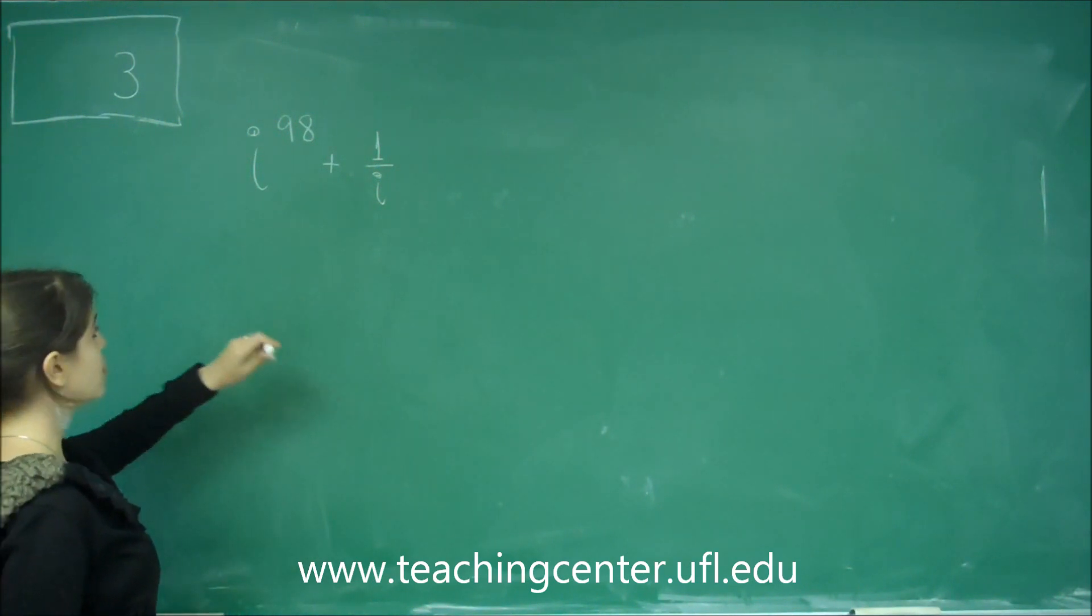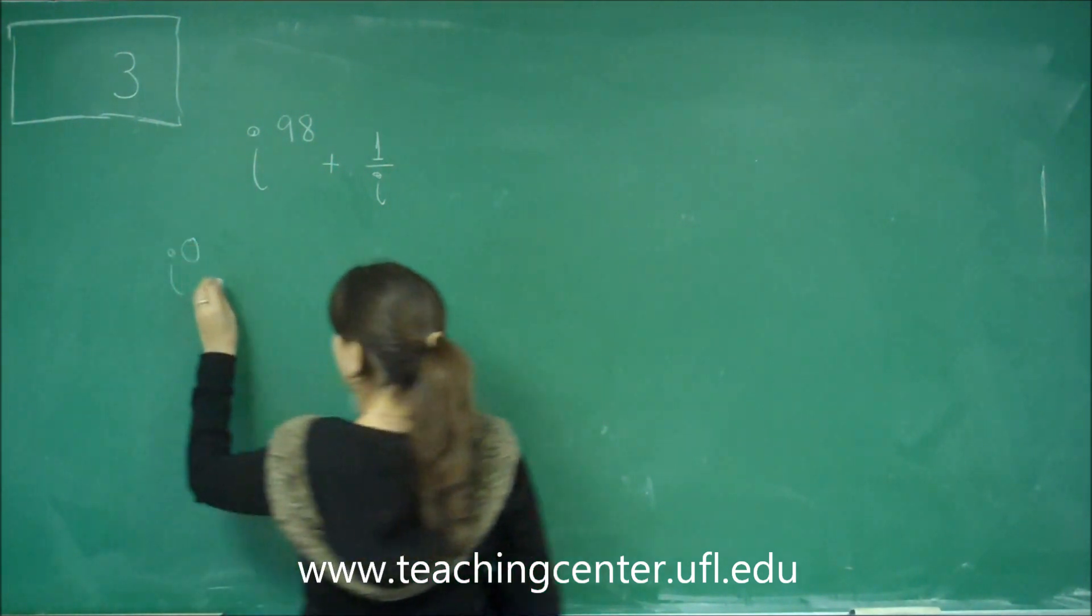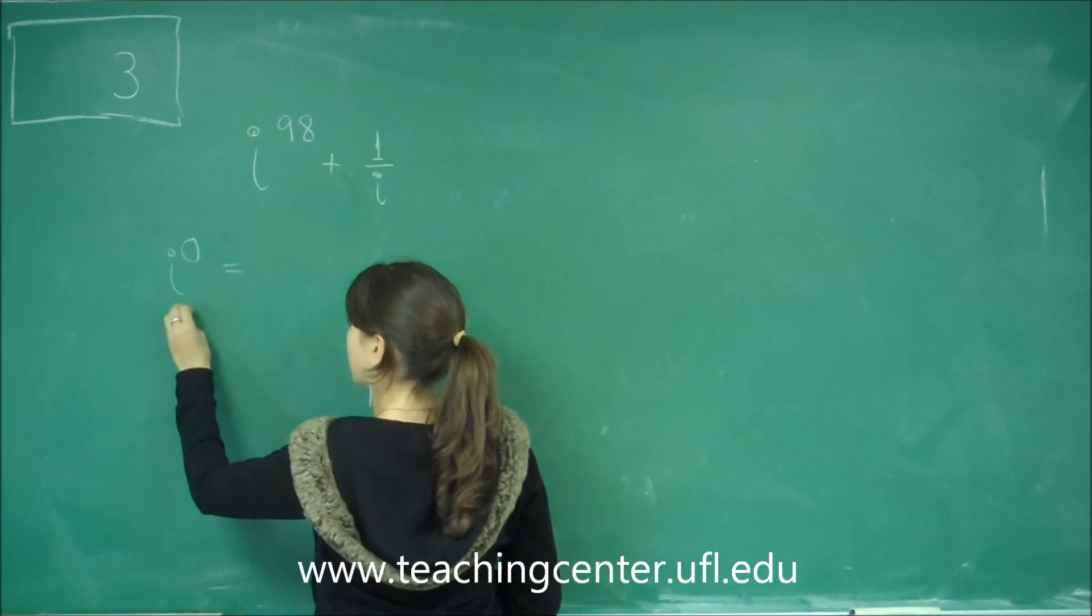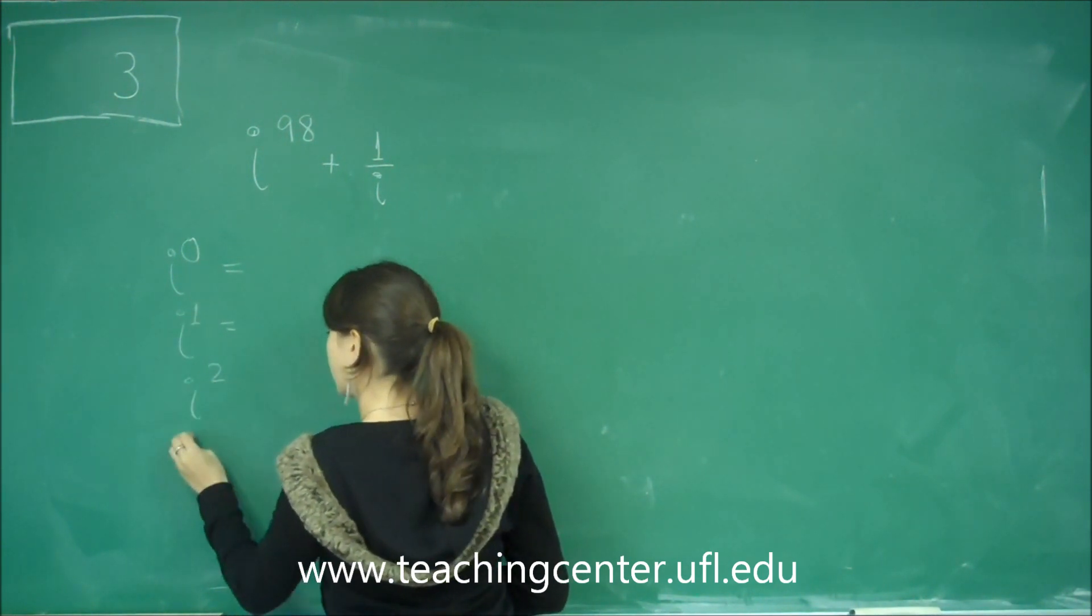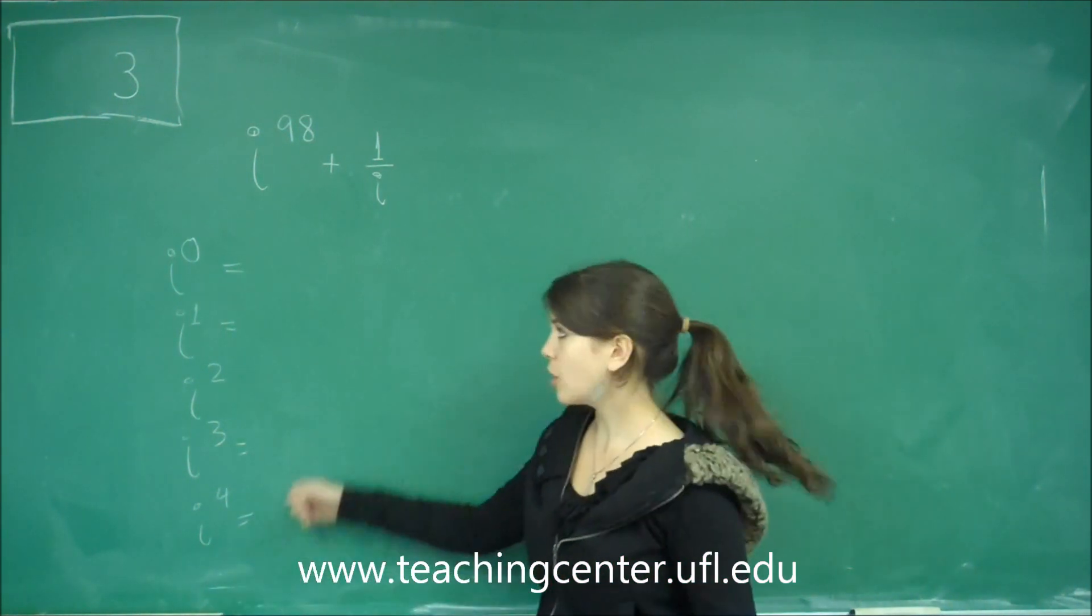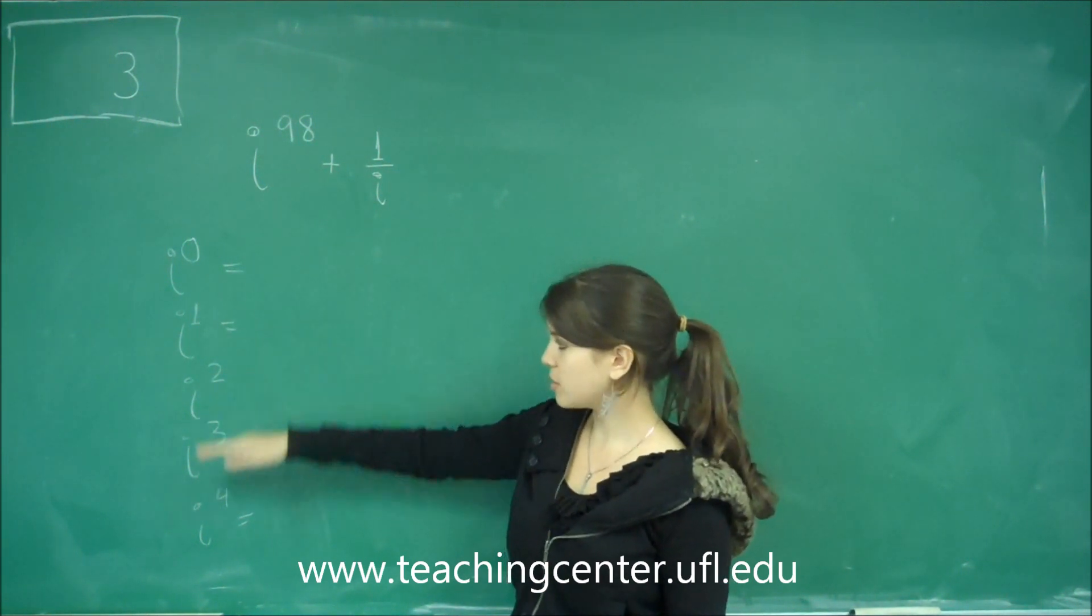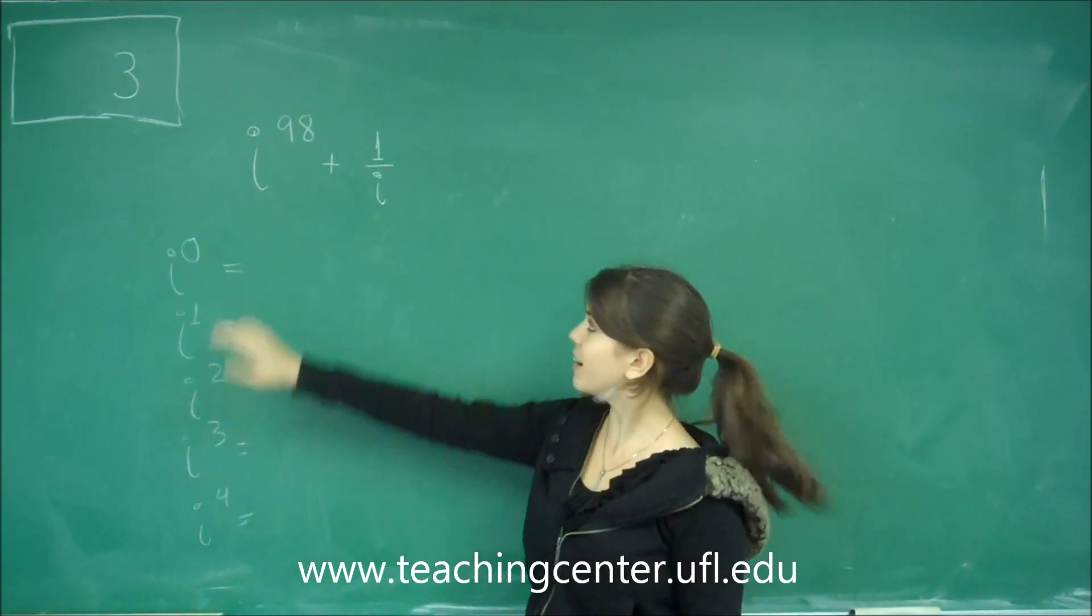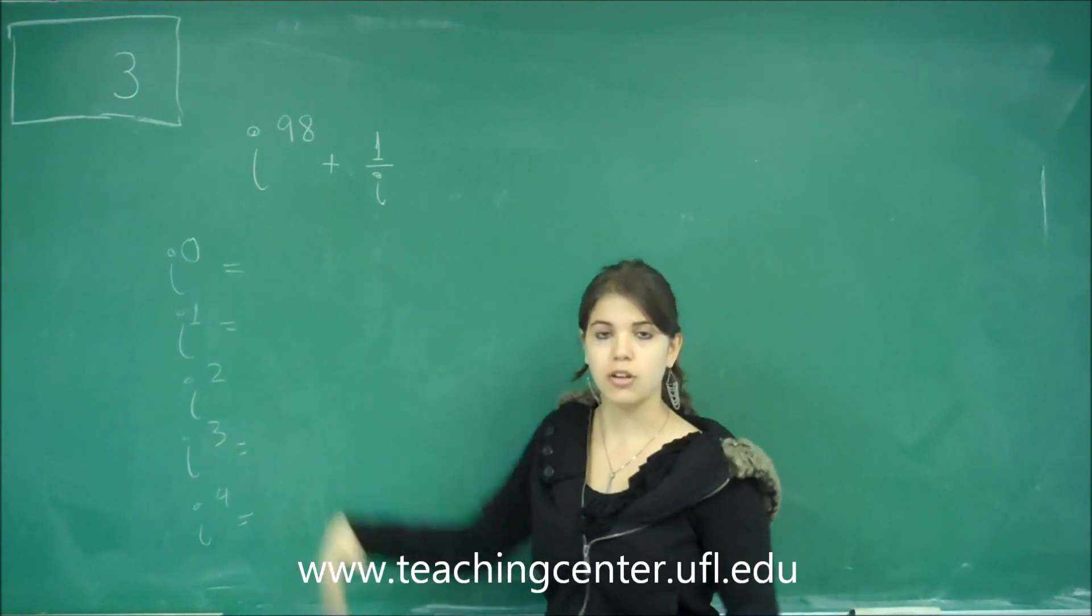The first things to know are i to the 0 power and the repeating patterns for i. So we know i to the 0 power, i to the 1st power, i to the 2nd power, i to the 3rd. After this, it just starts to repeat back from here. So we just have to see how many times around this cycle it will go if we want to find i to the really high power, like i to the 98th.